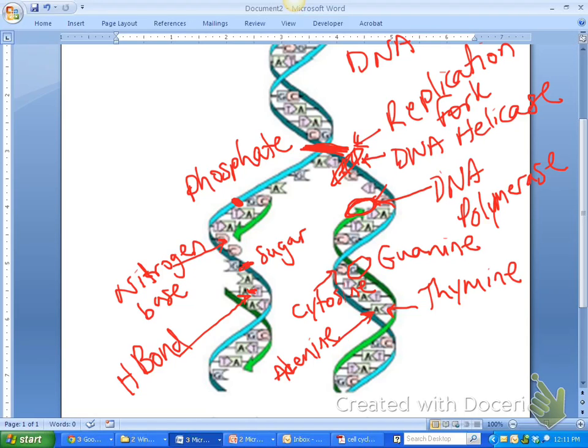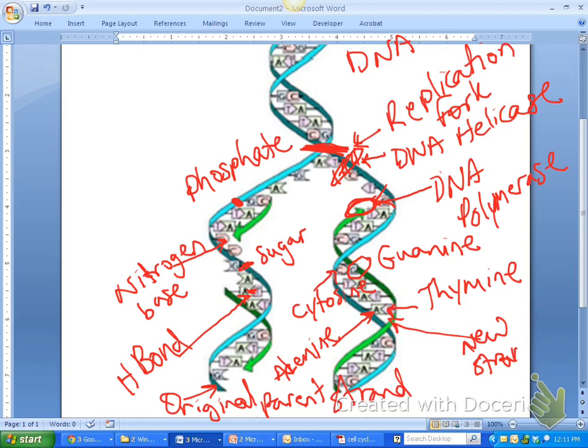This blue strand is the original strand or the parent strand. And this green strand, this is going to be the new strand, also known as the daughter strand. So the new or the daughter strand. Okay?